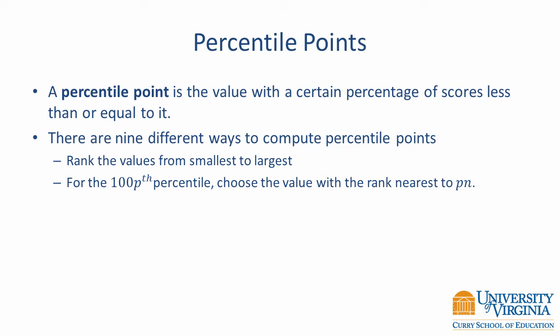A percentile point is the value with a certain percentage of scores less than or equal to it. It is also called a percentile or quantile. There are several different ways to compute percentile points and the most basic one is to rank the values from smallest to largest and choose the rank nearest p times n in order to obtain the 100pth percentile. This simple method is easy to understand, but statistical software typically uses more complex methods of computing percentiles.